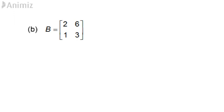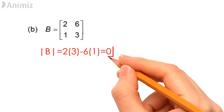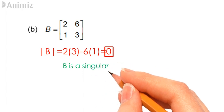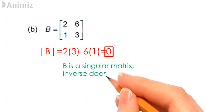we first need to find the determinant of B. This is done by taking the product of 2 and 3 minus the product of 6 and 1. Since the value obtained for the determinant of B here is 0, this shows that B is a singular matrix and therefore the inverse matrix of B does not exist.